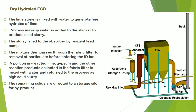Dry Hydrated FGD: the limestone is mixed with water to generate hydrated lime. Processed makeup water is added to the slaker to produce solid slurry. The slurry is fed into the absorber by a reagent feed pump. The mixture then passes through a fabric filter or ESP for removal of particulate matter before entering the hydrophane. A portion of reacted lime, gypsum and other reaction products collected in the fabric filter is mixed with water and returned to the recirculation system as high solid slurry. The remaining solids are directed to a storage silo as a by-product, and clean gas exits from the stack.